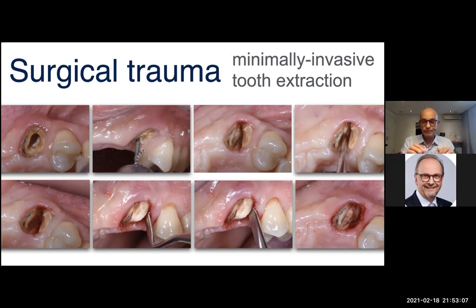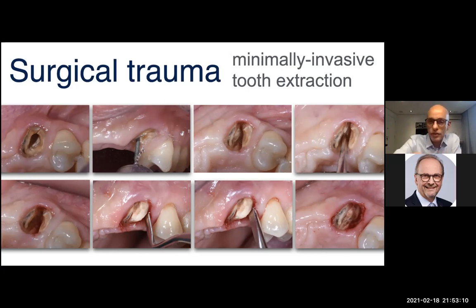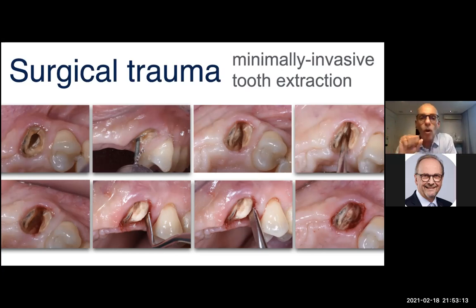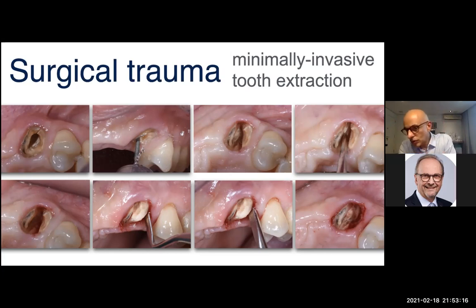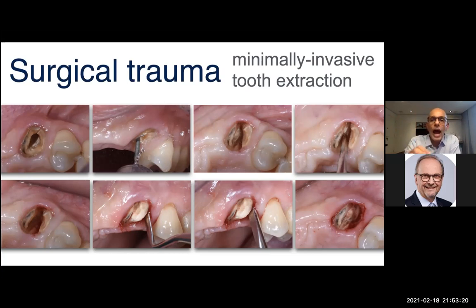If I am able to leave the buccal wall intact, the buccal wall will act as a resorbable barrier. I know the buccal wall will eventually disappear, but it stays like a resorbable membrane that after some time resorbs. But when it resorbs, the granules of my graft are already stabilized by the woven bone. How do I prevent fractures of the buccal wall? There are several ways to extract a tooth minimally, but what I do: I take a bur, I divide the root in two pieces — mesial and distal.